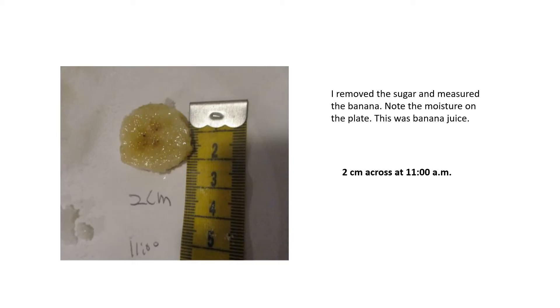When I came back in an hour I scraped all the sugar off the banana. Now look at it. It's shrunk. It's about two centimeters. This doesn't come to two here by the way I have it lined up, but when I drew around it and measured the circle it was two. Look at all this. This is banana juice and the banana looks like it's kind of falling apart. So in one hour it has shrunk from three centimeters to two centimeters.